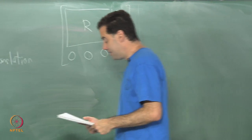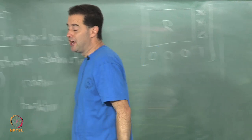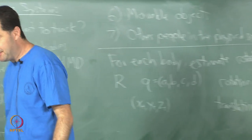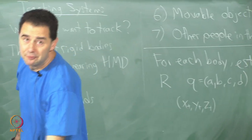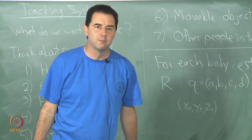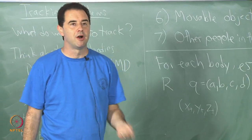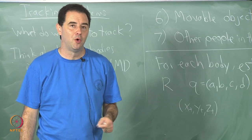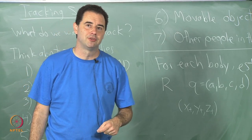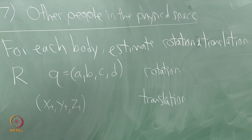Let me give you a very simple example. I'm going to go in two phases: I'll first talk about estimation of orientation, and then I'll talk about estimation of orientation plus translation. It turns out orientation, based on current technology, is easier than translation in terms of estimation. It's a bit surprising perhaps, but that is the way it works.